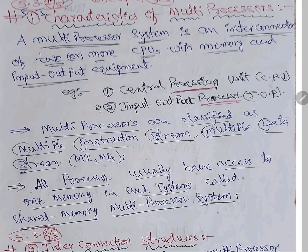For example, we have the central processing unit CPU, and we have input-output processors and input-output devices. We have many CPUs and input-output devices also many. But the processor is one up to the fourth unit. Now in the fifth unit we are going to learn about multiple processors. Multiple processors are classified as: Multiple Instruction Stream Multiple Data Stream — MIMD. We have already discussed this in our previous video.